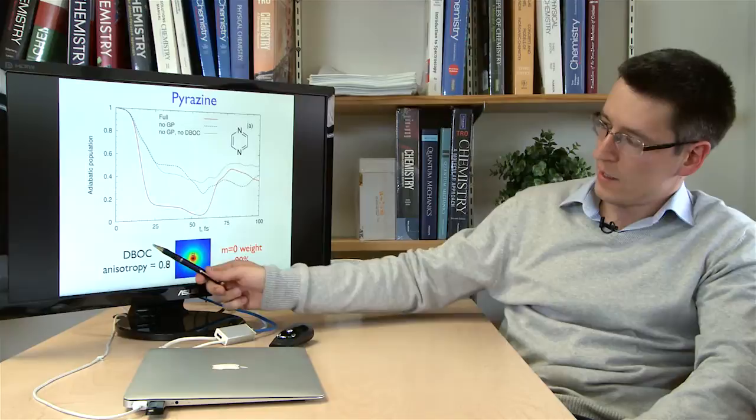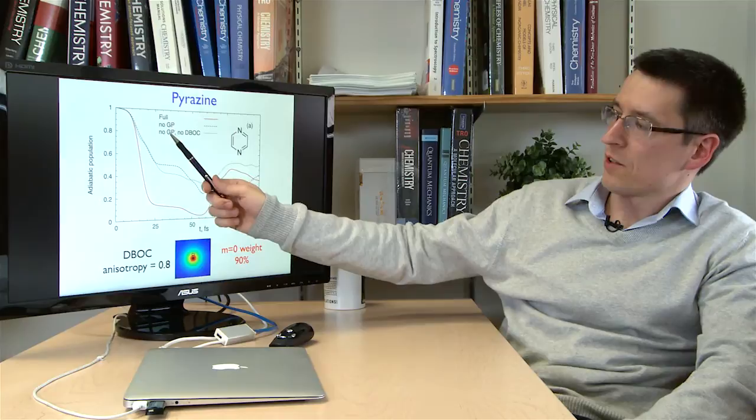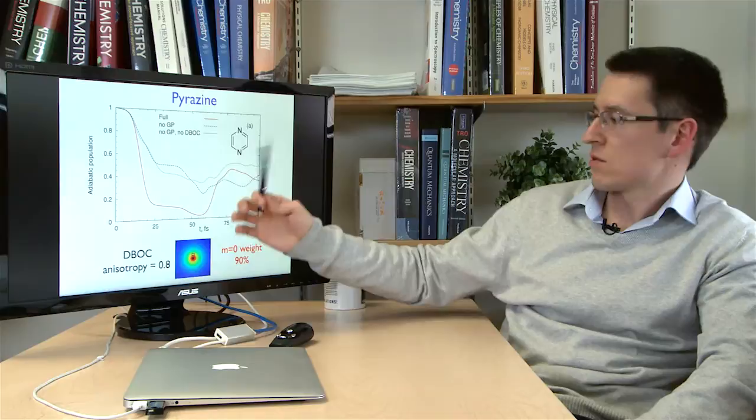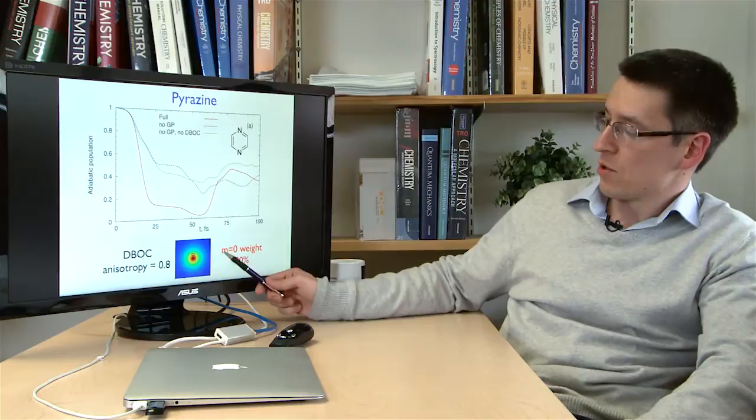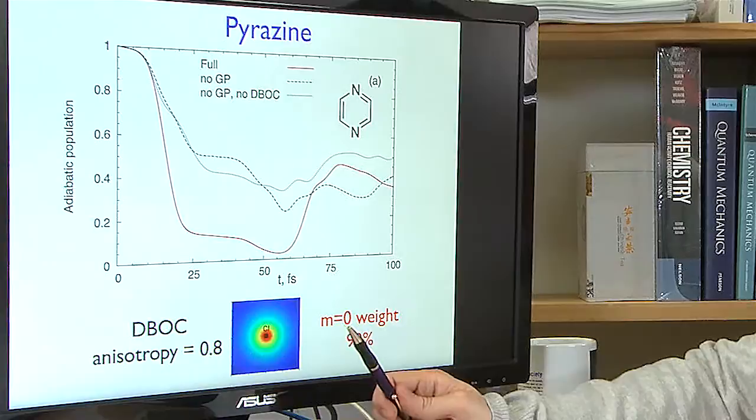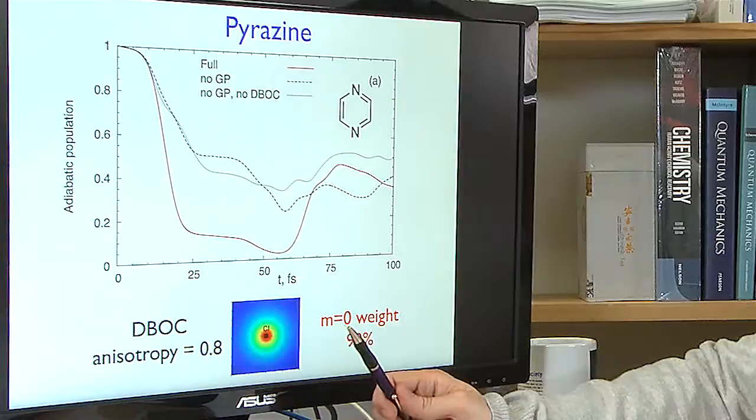A somewhat similar situation arises in the third system, pyrazine, where again the diagonal Born-Oppenheimer correction is very isotropic — the anisotropy is very small. Without geometric phase, or without geometric phase and without DBOC, the dynamics is somewhat similar qualitatively. But they are both very different from the full exact dynamics because the M=0 component is still high — about 90% when the wave packet comes close to the conical intersection. Without geometric phase, the transition is less efficient and the transfer rate is much lower than with geometric phase.